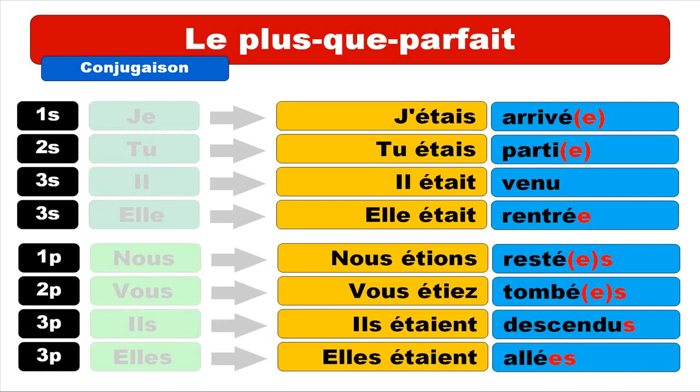Important thing: you can see that I've been putting some E and S in red. When you use être for the plus que parfait, you must add E if the subject is feminine, S if the subject is plural, and ES if the subject is both feminine and plural. Let's repeat with all the liaisons: j'étais arrivé, tu étais parti, il était venu, elle était rentrée, nous étions restés, vous étiez tombés, ils étaient descendus, elles étaient allées.